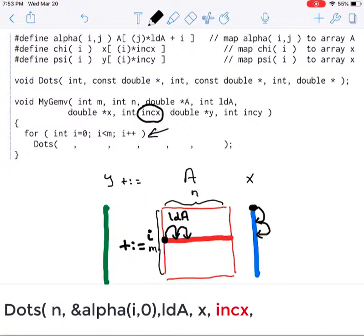And then finally, you need to determine what element of y needs to be updated. Now notice that that's the i-th element of y, and the i-th element of y is given by psi of i. But you need to pass in the address of that so that it can be updated. And therefore, you pass in &psi of i.